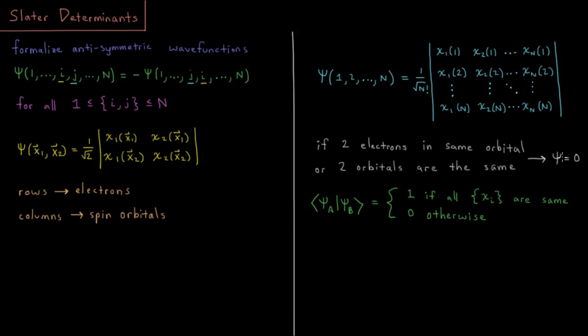The wave function goes to zero and the wave function disappears if you have two electrons in the same spin orbital. If any two spin orbitals are the same, that is going to disappear as well. That's a nice property of determinants: if any two rows or any two columns are equal, the entire determinant is going to be equal to zero.